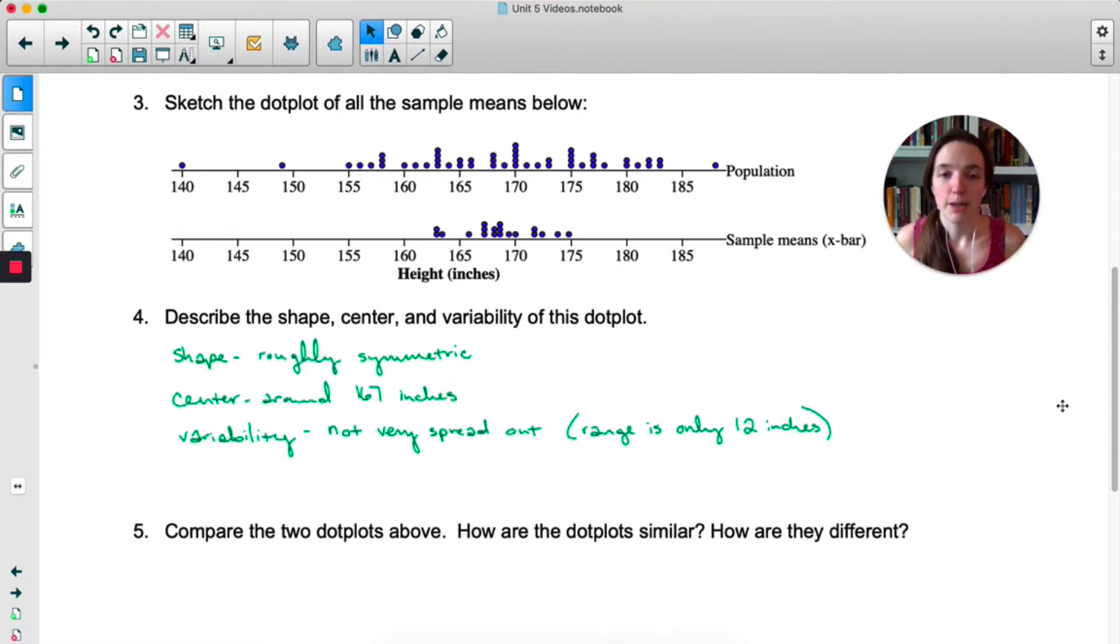I would say the shape of the sampling distribution is roughly symmetric. It might be normal. At the time of filming, I only have like 20 data points because I did it myself, and I got tired, to be totally honest. So maybe yours looks more normal. Mine just looks symmetric. The center looks to be around 167, and the variability is, it's not very spread out. The range is only 12, and most of them, most of the data points, are right around the center. Very few are far away.